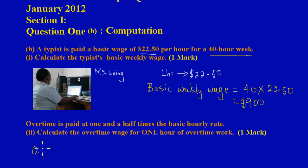If you're asked to calculate overtime wage for one hour - I'll just do OT for overtime for short. Notice here they said overtime is paid at one and a half times the basic hourly rate. We know the basic hourly rate they gave in part one, which is $22.50, which I've circled. So if overtime rate is paid at one and a half times the basic hourly rate, which is $22.50...